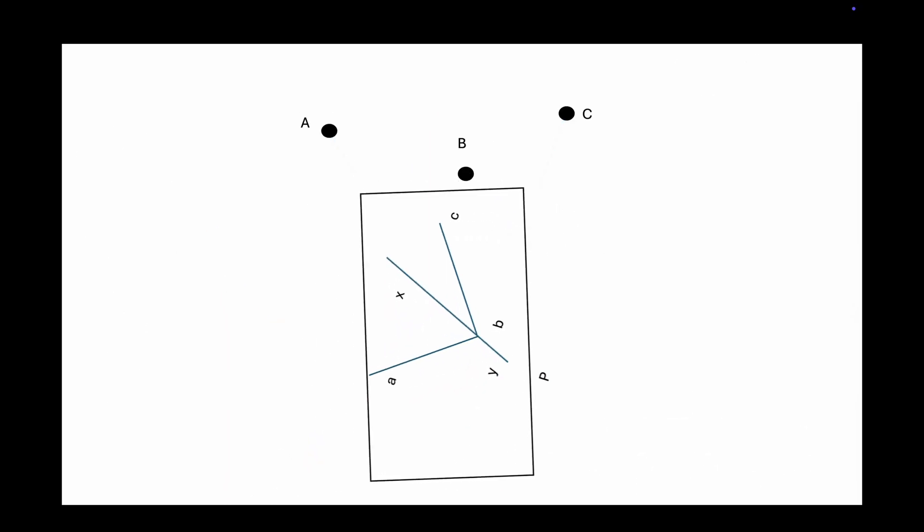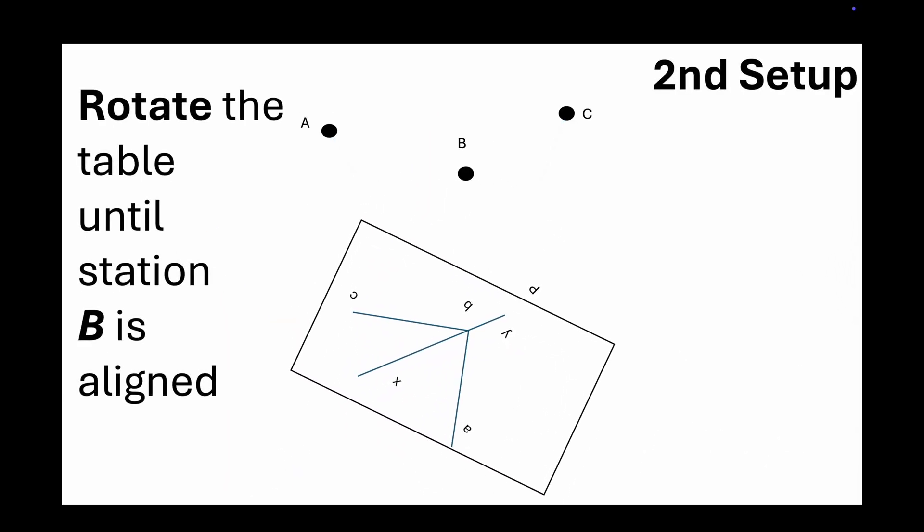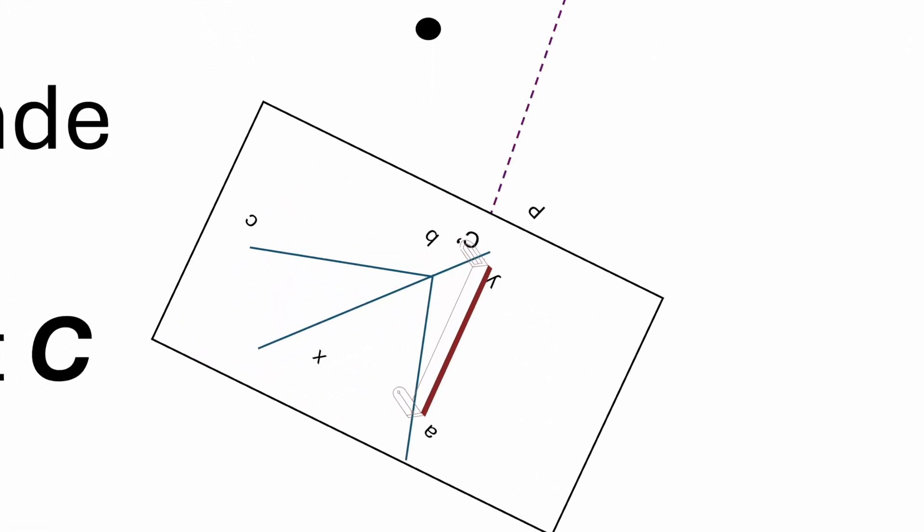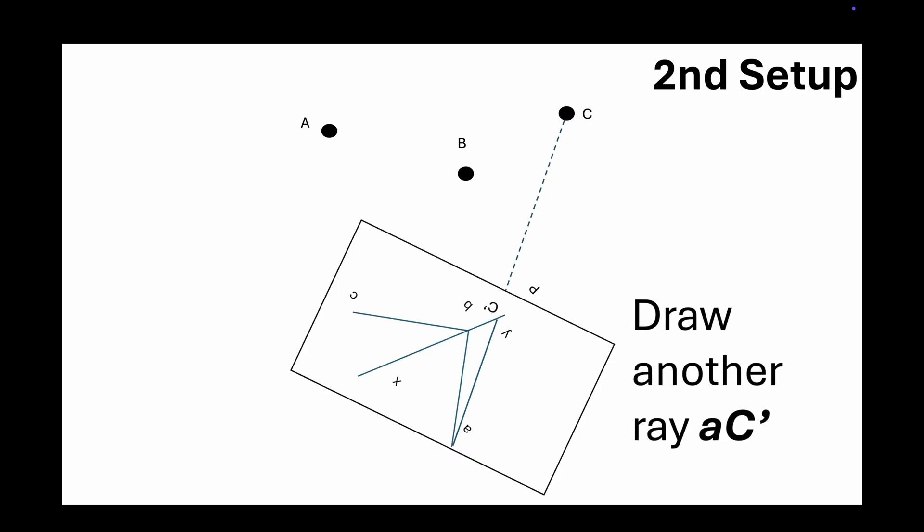Next, rotate the table until station B is aligned. Keep the alidade at A and sight C. Draw another ray AC dash.